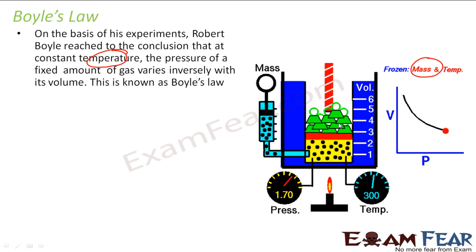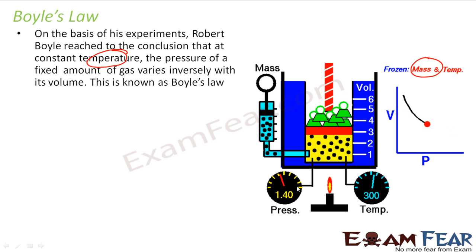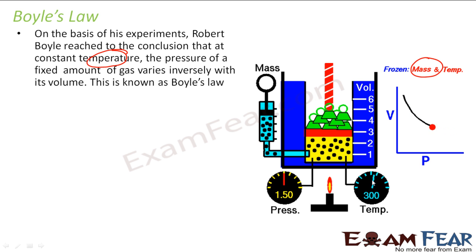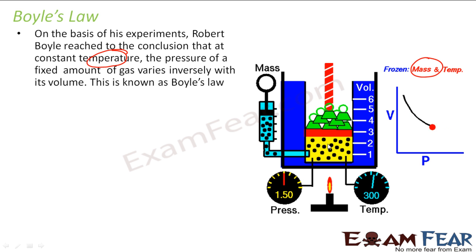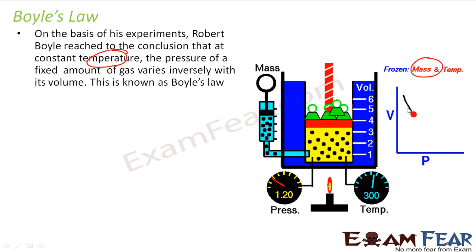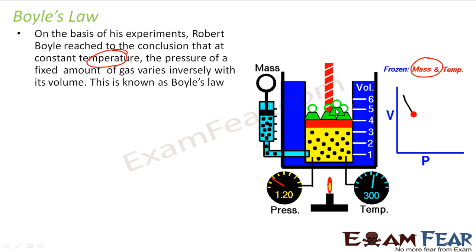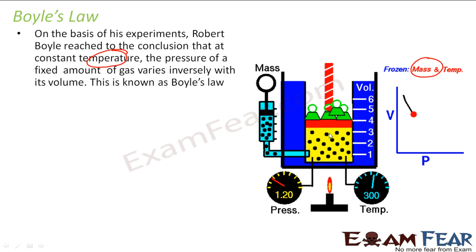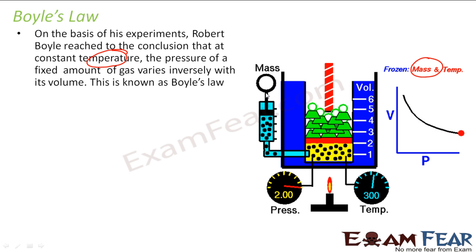You are increasing the pressure by putting more weights, and the volume is decreasing. Mass is constant and temperature is constant. You increase the pressure, the volume decreases. So pressure and volume are inversely related — this is what Boyle observed long ago by his experiment, and this law is called Boyle's law.